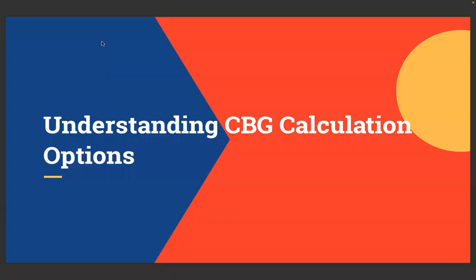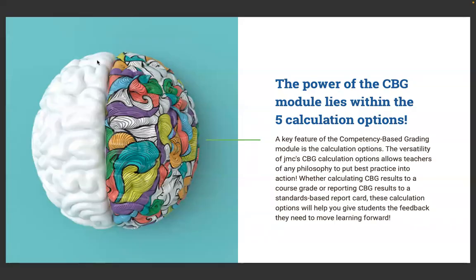Now let's jump into understanding CBG calculation options — what I feel is truly revolutionary about this product. We're not just totaling points and spitting out a course grade. We're intelligently looking at each standard and the proficiencies, then deciding where students should be grade-wise as a result. A key feature of the competency-based grading module is the versatility of its calculation options, which allow teachers of any philosophy to put best practice into action and give students the most accurate grade possible.